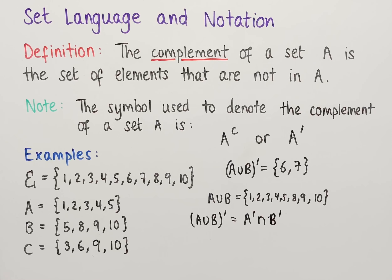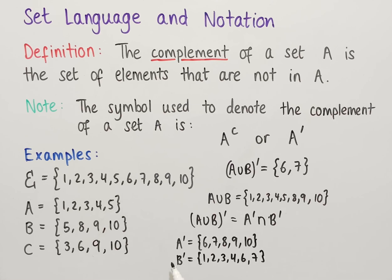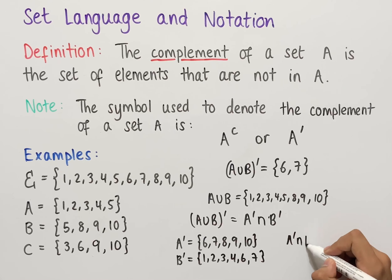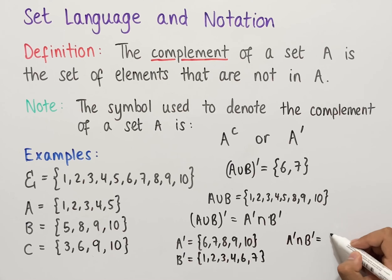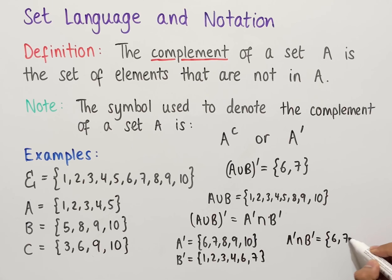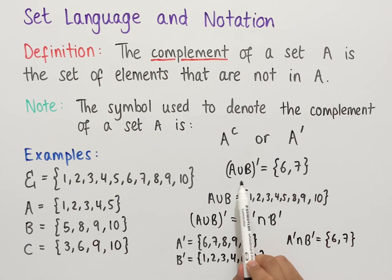Let's check that to see if it works. We previously worked out A complement as {6,7,8,9,10} and B complement as {1,2,3,4,6,7}. The intersection of these two sets — the elements in both A complement and B complement — is 6 and 7. Notice how this is exactly the same as the set we have for A union B complement.